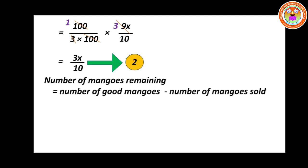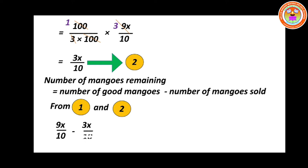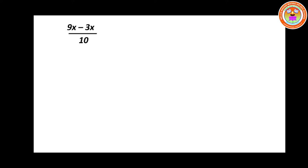Now number of mangoes remaining — it is already given in the question: 240 mangoes are remaining. So number of mangoes remaining equals number of good mangoes minus number of mangoes sold. From equation 1 and equation 2: 9x divided by 10 minus 3x divided by 10 equals 240. Since the denominator is same, you can take 10 as LCM directly. So 9x minus 3x divided by 10 equals 240.